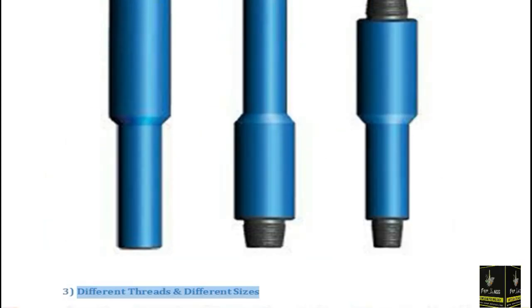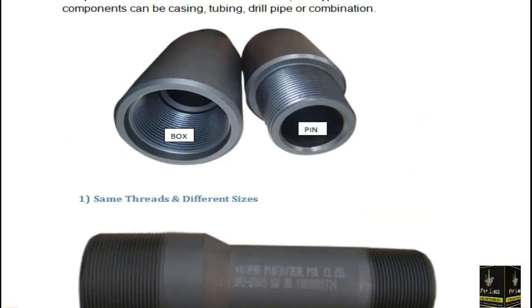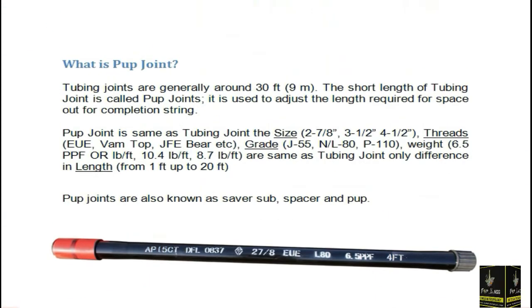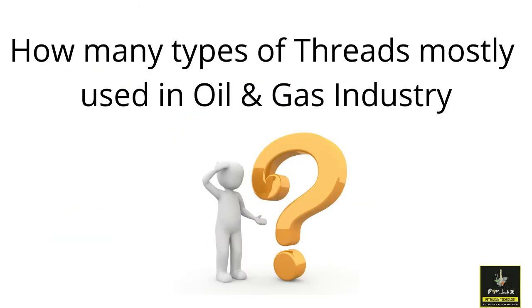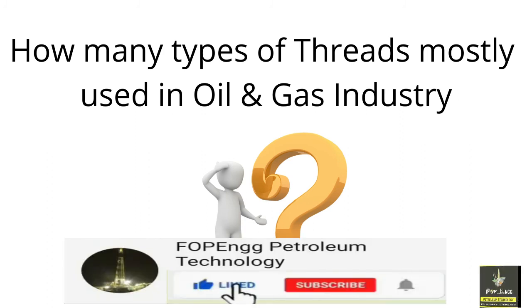I hope you understand the difference between the pup joint and the crossover. Now here is a question: how many types of threads are mostly used in the oil and gas industry? If you know the answer, please mention it in the comment box.